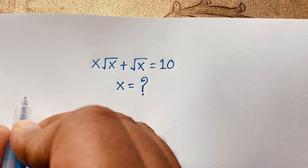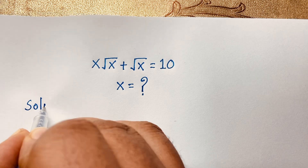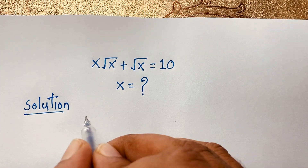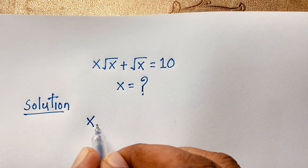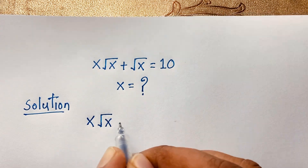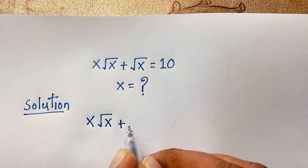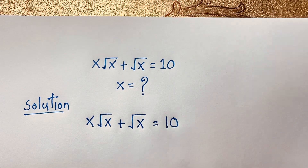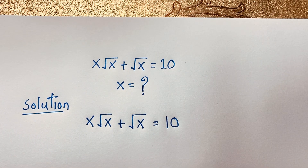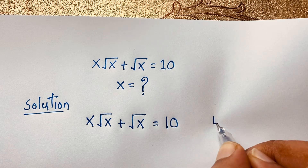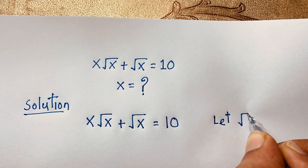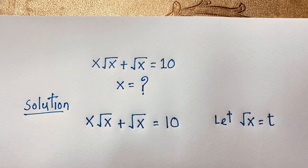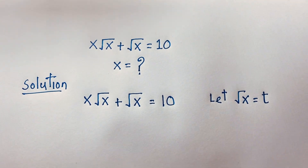Our question is: x times square root x, plus square root x, is equal to 10. Now let square root x equal t.